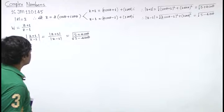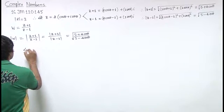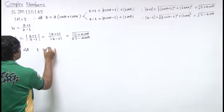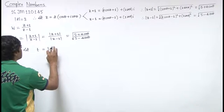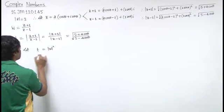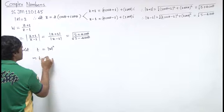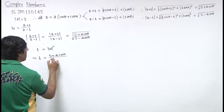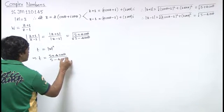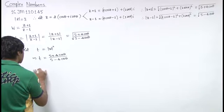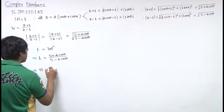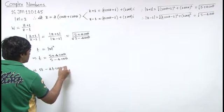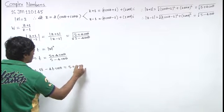We need to find its maximum and minimum value. So, let t equal to mod of w square. So, T will be 5 plus 4 cos theta upon 5 minus 4 cos theta.